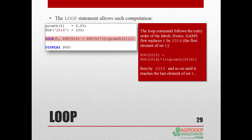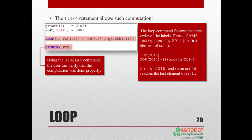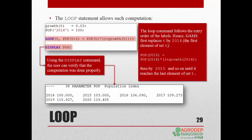Until it reaches the last element of set T. Using the display command, the user can verify that the computation was done properly. You can see that in 2015 the population is 3% greater than 2014, in 2016 it is 3% greater than 2015, and so on.